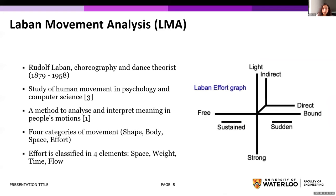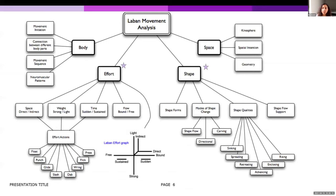The Laban Movement Analysis framework was developed by Rudolf Laban, a choreography and dance theorist who studied human movement. It is extensively used in psychology, computer science, and robotics — it's a method to analyze and interpret meaning in how people move. It consists of four main categories: shape, body, space, and effort. The effort category contains four elements: space, weight, time, and flow. This research focuses on effort and shape.